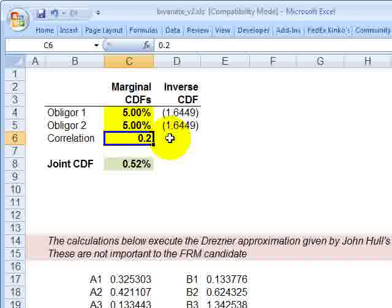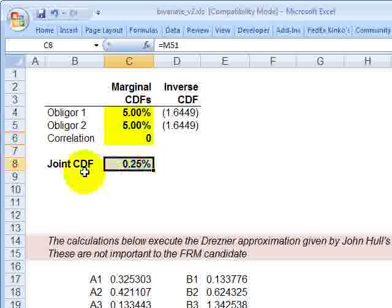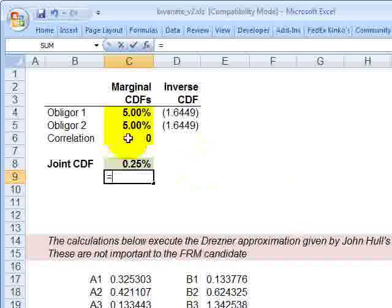And so, for example, if I go way down to zero here, my joint probability of both defaulting, if each marginal probability of default is 5%, is what you would expect. It's 0.25% because we're assuming independence here. And that means if we multiply the 5% by 5%, we get the 0.25%. We don't need a complicated formula for that when there's independence.